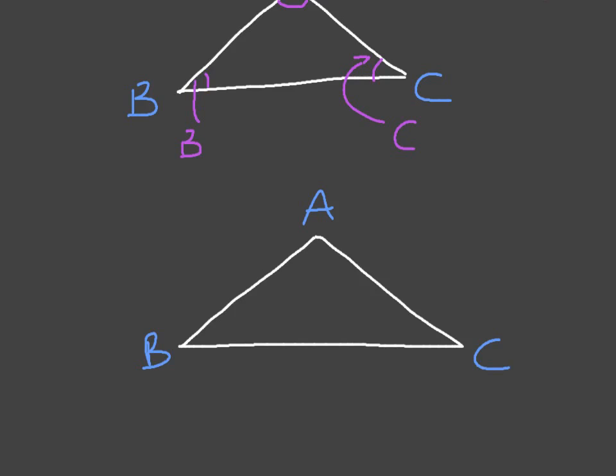Now, to label the side lengths correctly, we do as follows. If I look at the angle capital A, the side length which is opposite that angle is this side length here. And so we label that side length lowercase a.